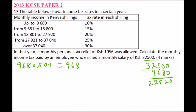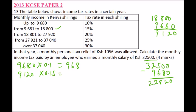For the second bracket, we subtract 9,680 from 18,800, which gives us 9,120. This amount is taxed at 15%, which is 0.15. Multiplying 9,120 by 0.15 gives 1,368. You can confirm this by subtracting 18,800 from 27,920 — the difference is still 9,120.